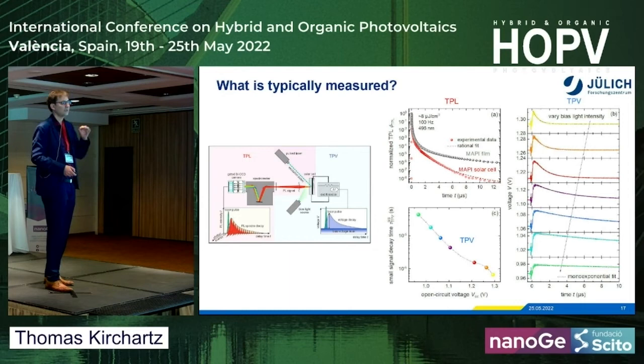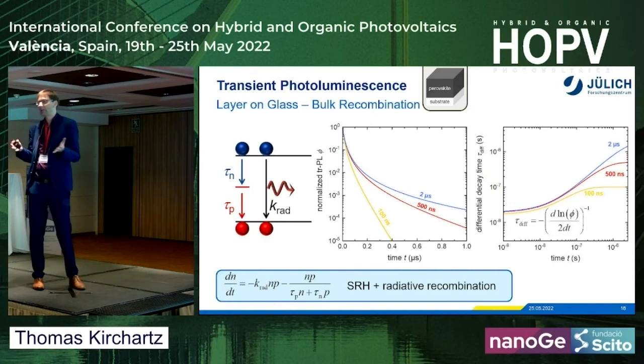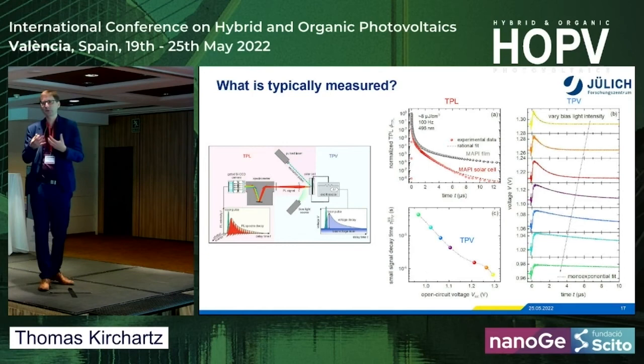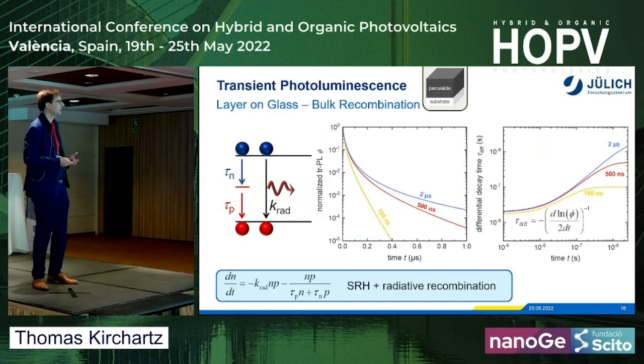The second measurement is transient photovoltage. Here you do a small-signal measurement: you change the bias light at different conditions, fit an exponential to each decay, and then plot the exponential decay time versus the open circuit voltage of your bias light. The challenge is finding a way to display both TPL and TPV data comparably — we don't just have two numbers, we have much more than two numbers to compare.